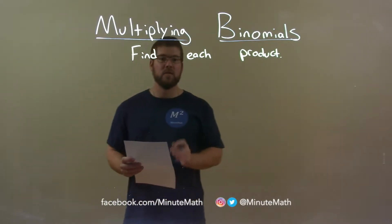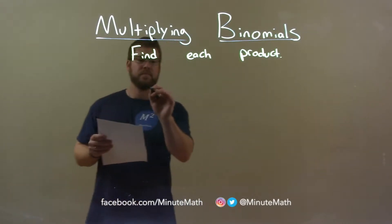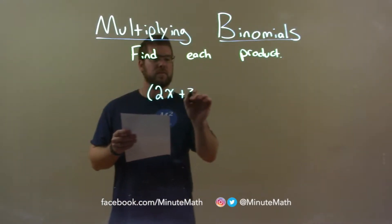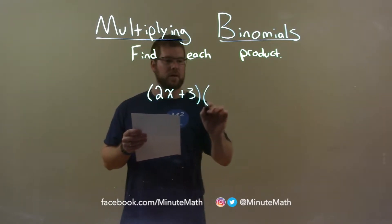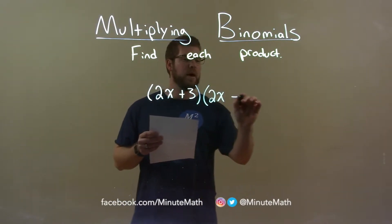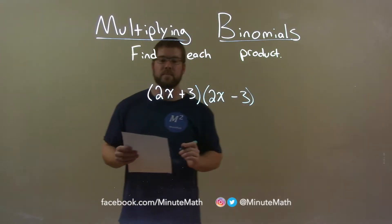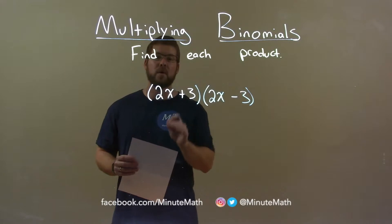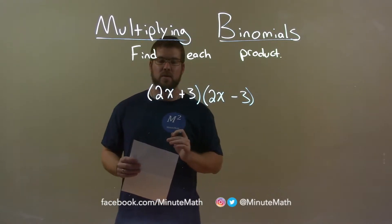If I was given this product, 2x plus 3 multiplied by 2x minus 3, we want to take all parts of our first parenthesis and multiply it by all parts of our second parenthesis.